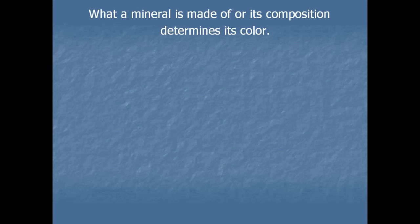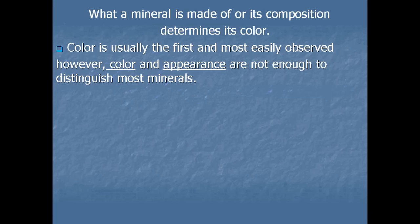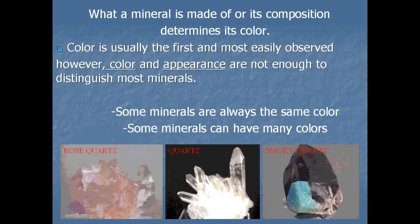A mineral's composition — what it is made of — is partly reflected by its color. Color is usually the first and most easily observed property. However, color and appearance are not enough to distinguish most minerals, since some minerals are always the same color and some have many colors. For example, rose quartz looks pink, regular quartz looks white or clear, and smoky quartz looks black — they're all quartz, just formed with different impurities.